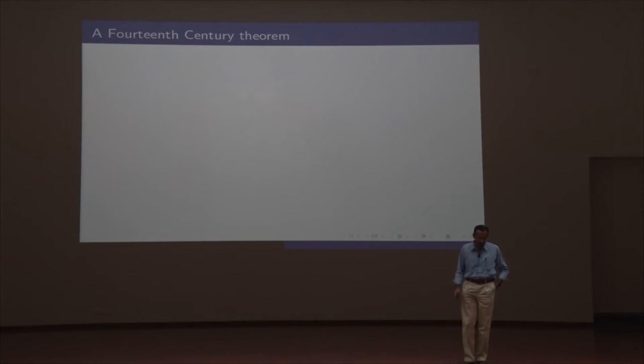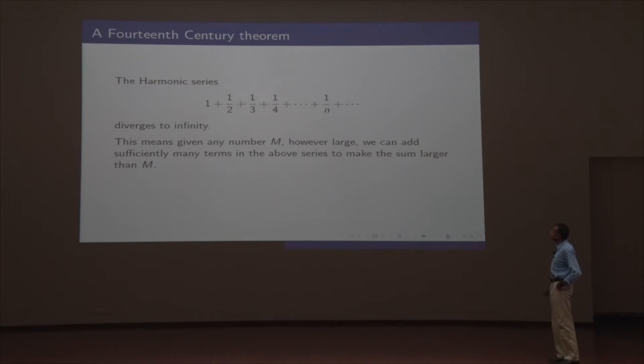Okay, so the story I want to give you some idea of has two historical starting points. Both of them, in fact, coincidentally start from the 14th century. So, here is a 14th century theorem for you. This involves numbers. If you take what's called the harmonic series, which is just the sum of the reciprocals of all the integers, positive integers, fact of life, this diverges to infinity. So, this fact was first realized several centuries ago. And what does this mean, diverges to infinity? This means that given any number, m, however large, you can add sufficiently many terms and make this larger than m. That's what it means to say the series diverges to infinity.